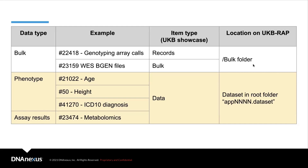An example dataset is field 21022, which captures the participant age. This field is of item type data in the UKB showcase, and this data can be found in the .dataset file in the root directory of your project.